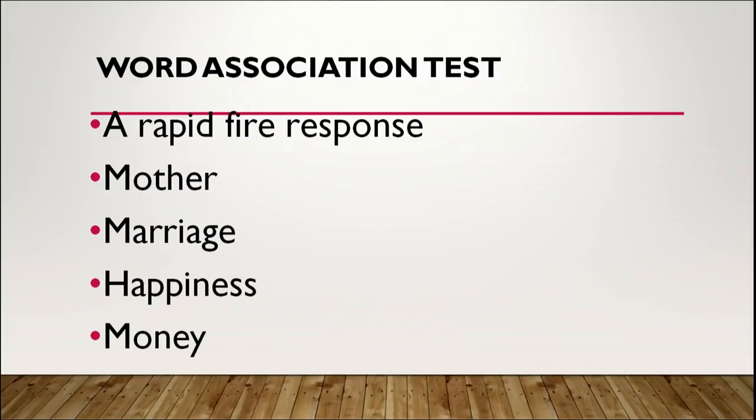The second projective technique is the Word Association Test. In contrast to the Rorschach Inkblot Test, where ample time was given, the Word Association Test is a rapid-fire response. You give one word and immediately the respondent should reply — perhaps two seconds to display the word and two seconds to respond. The moment the teacher says 'mother,' the first thing that comes to the subject's mind — marriage, happiness, money — they need to respond immediately. Since no time is given to think or frame an answer, the first response helps the researcher have a fair idea. The time needs to be monitored very strictly.